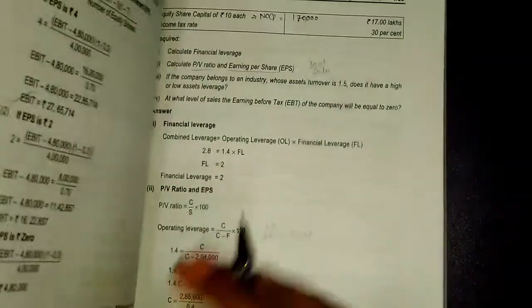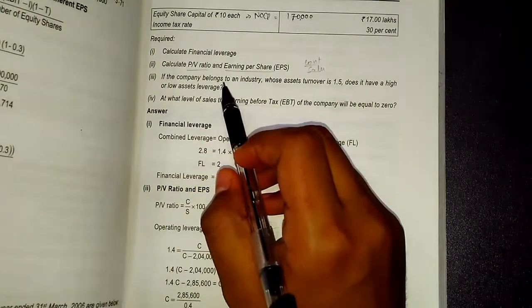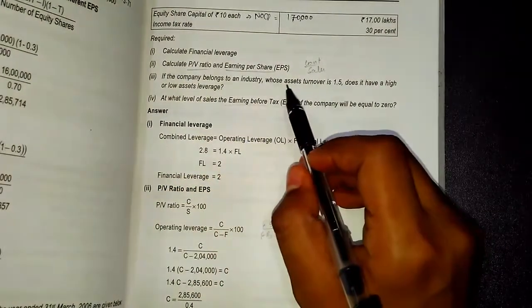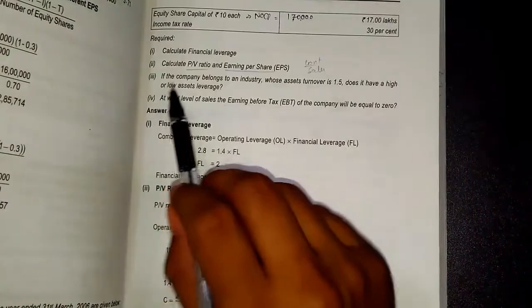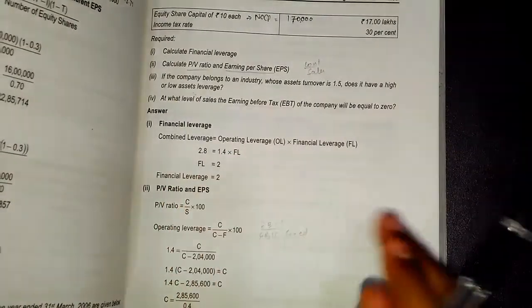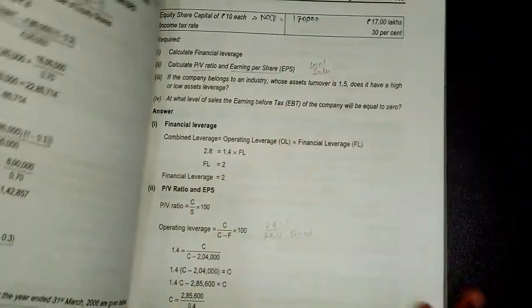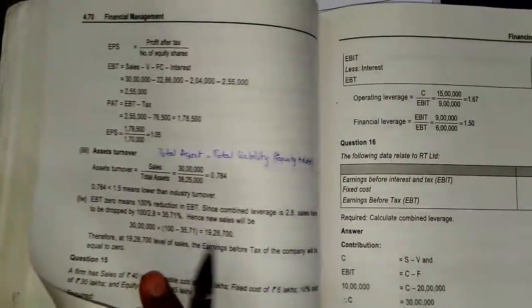The third part asks if the company belongs to an industry whose asset turnover is 1.5, does it have high or low asset leverage? We will leave it right now because it is not important. Such questions are not asked now.